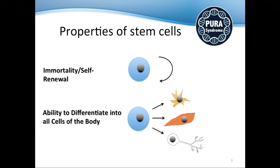So what are stem cells and what are their properties? In general, stem cells have two key features: they are immortal, meaning they can self-renew for an unlimited time and generate copies of themselves throughout our lives. And they can differentiate, meaning they can become essentially all kinds of cells in the human body — skin cells, liver cells, or brain cells.